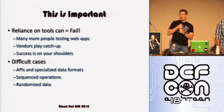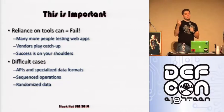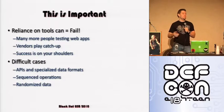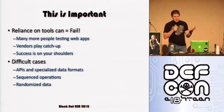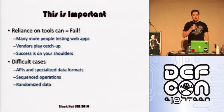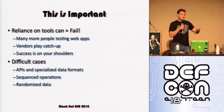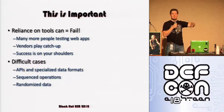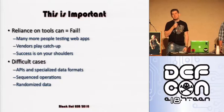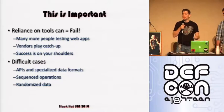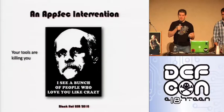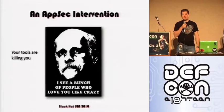There are also difficult cases where your standard testing tools won't really help you. APIs, for one — if you're going through testing your application and you run into an API, the scanner might not even see it unless it makes some sort of call. There are also sequenced operations: if there's a sequence of steps that need to happen prior to a test case, sometimes standard tools will fall flat. With randomized data, if every time the page lays out the data behind the menu options is randomized, there's no standard testing tool that will help you. That's why you need to write your own tools.